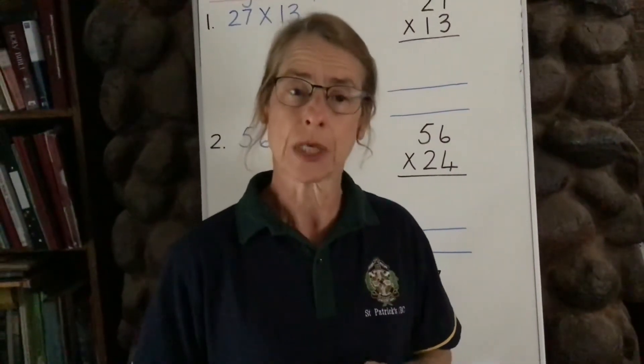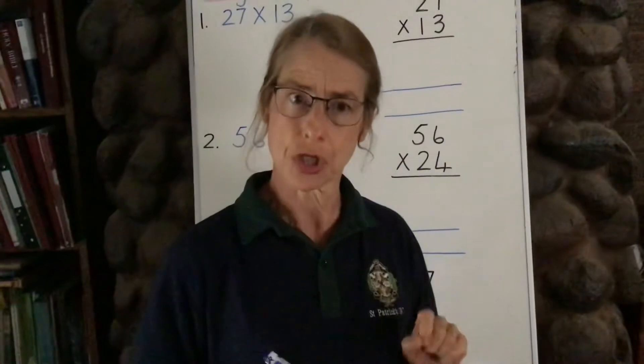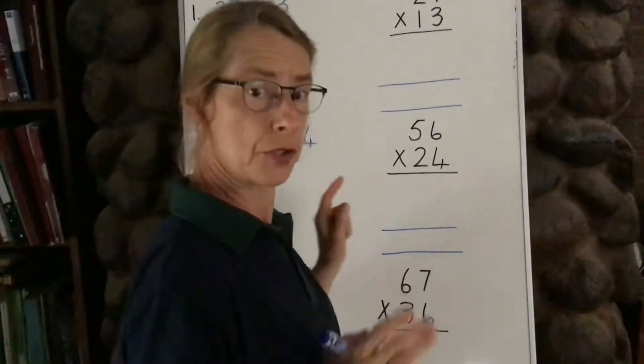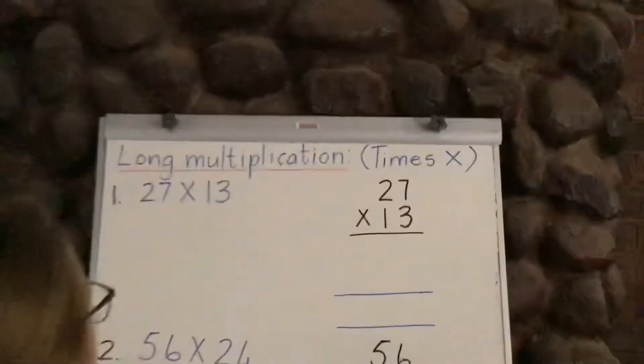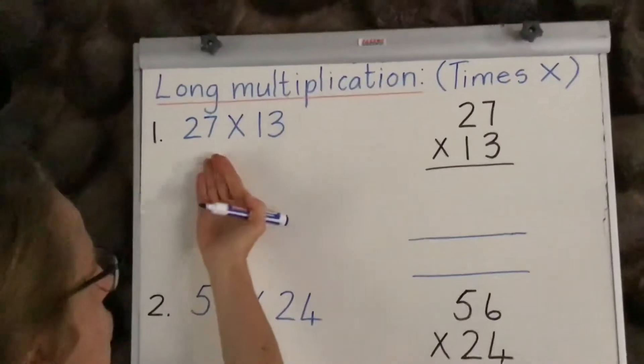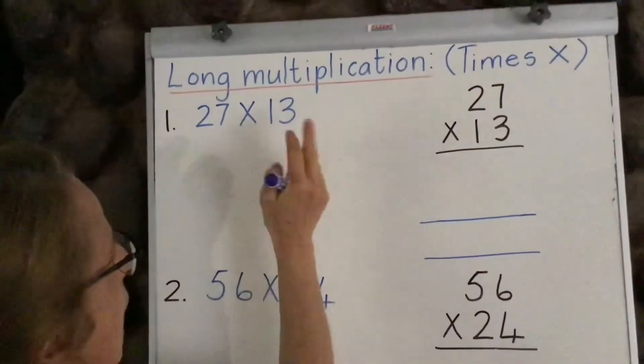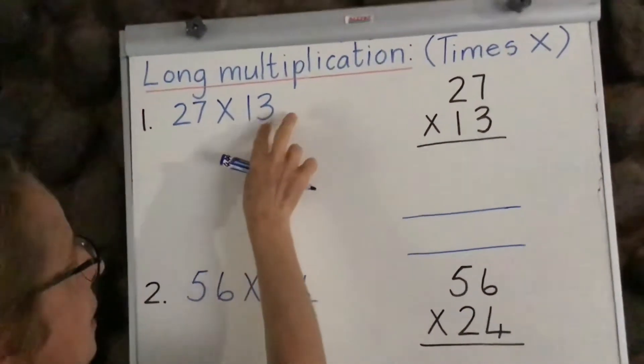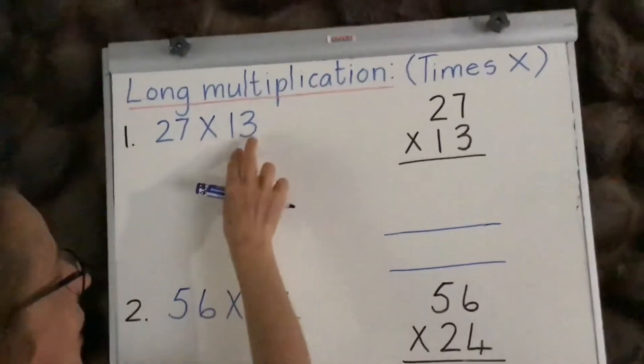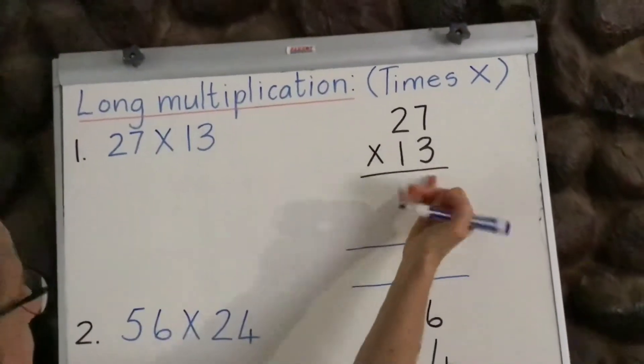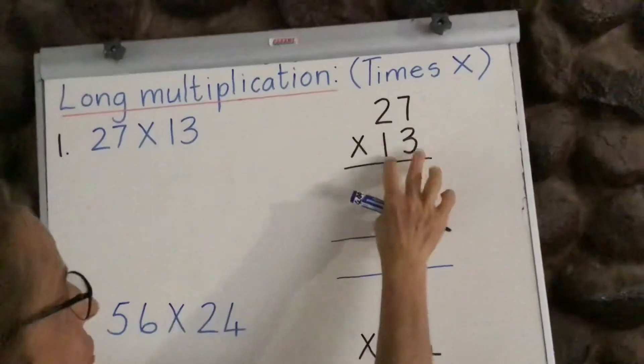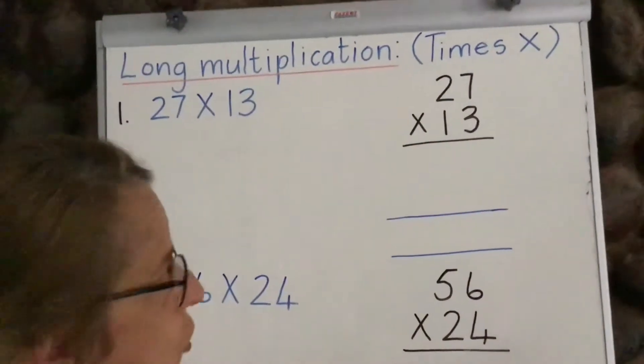In today's lesson, we're going to be doing long multiplication, and I'm going to show you exactly how we're going to do it so you can do your activities today. Now, today we're going to be multiplying, or times it by, two-digit numbers. So far, we've only used one-digit number at the bottom here, so now we're going to use two-digit numbers. Let's see how we must do it.